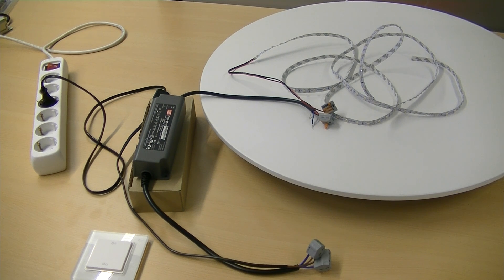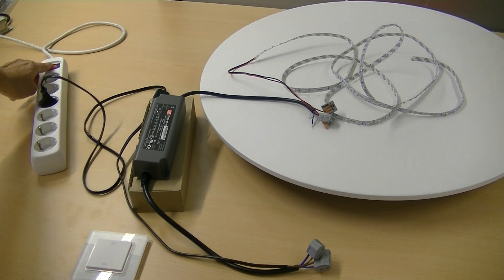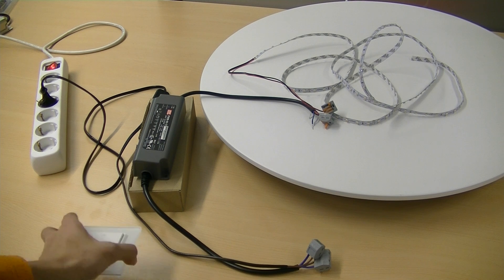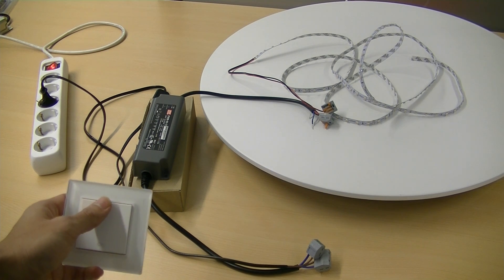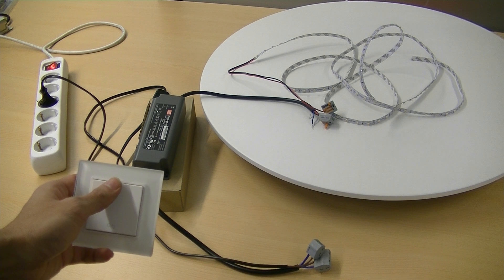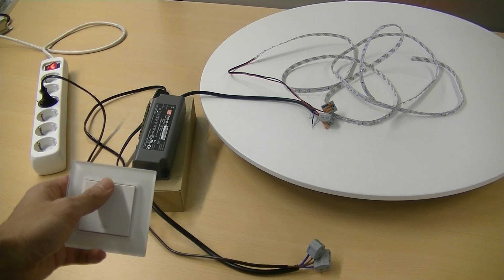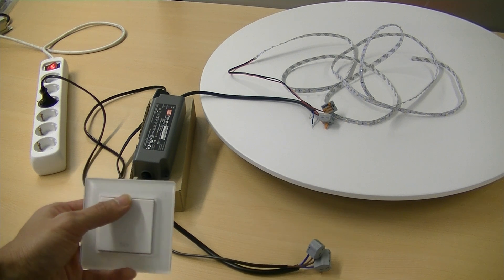Now we can power on the driver. After the mains is on, we can use this battery-less switch, or sometimes it's called a rocker. You can wirelessly control the LED driver. Now I can turn on the LED strip.